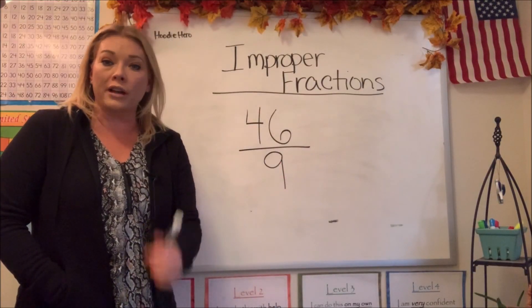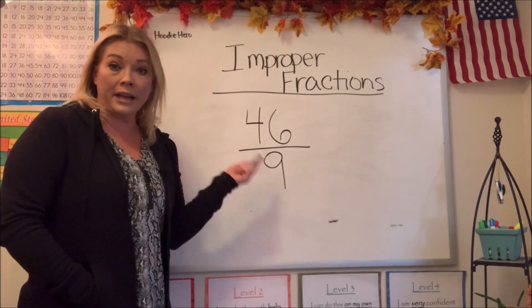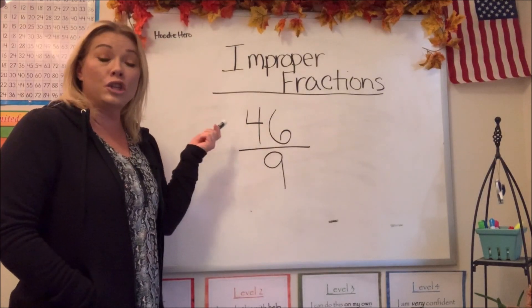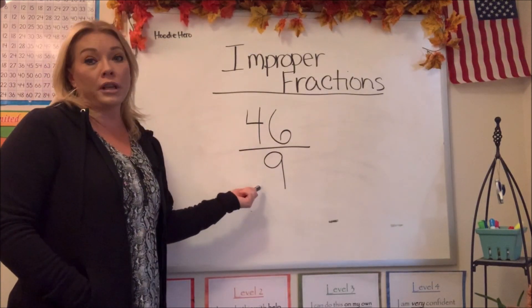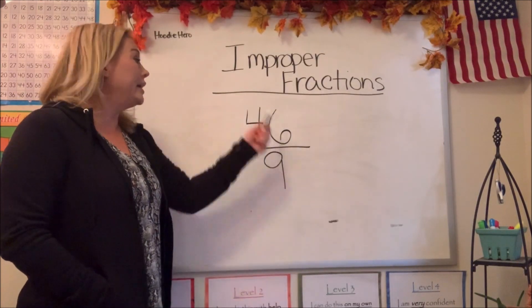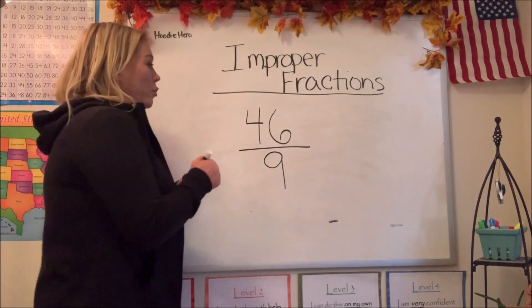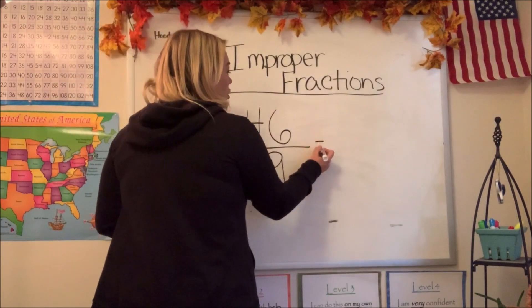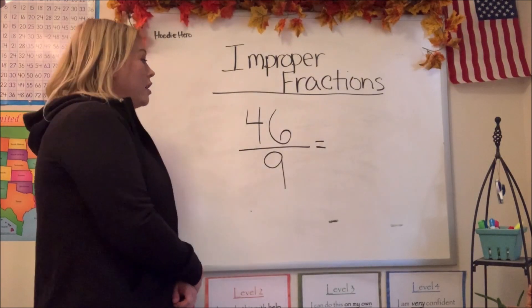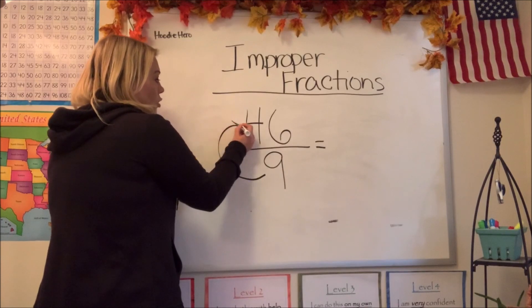Here's our first fraction: 46 over 9. We can identify right away that it is an improper fraction because the numerator, or top number, is larger than the bottom. This fraction does not make sense — we can't take 46 pieces when there are only 9 to start with. So we need to change this into a mixed number. The first step is to divide the denominator into the numerator.